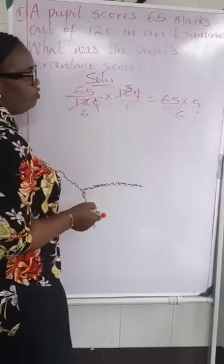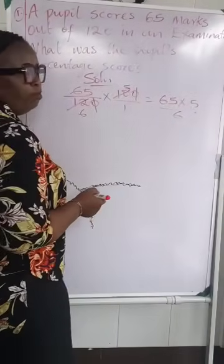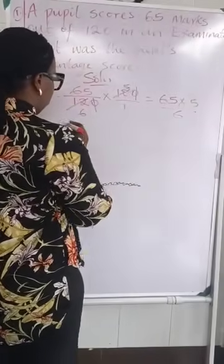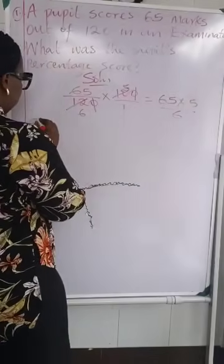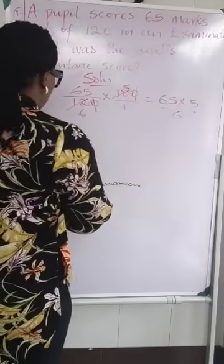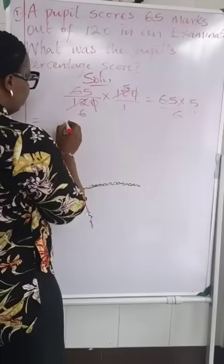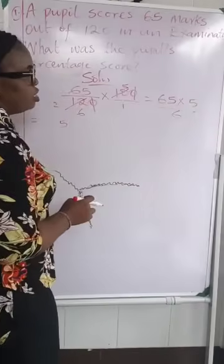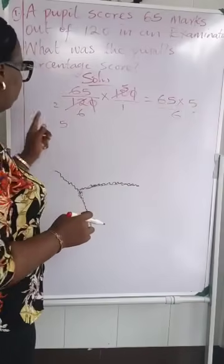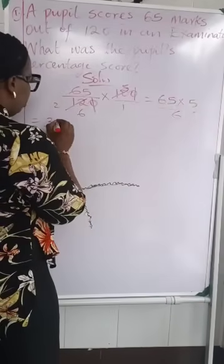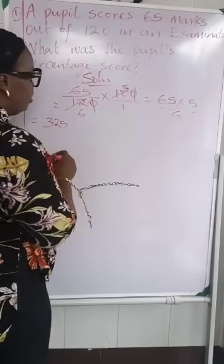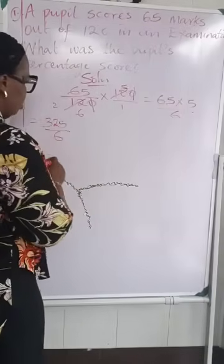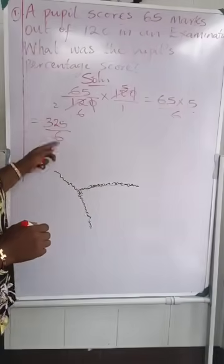So if we are multiplying 65 by 5: 5 times 5 is 25 — write our 5 and carry 2. 5 times 6 is 30, plus the 2 is 32. So we are going to have 325 all over 6.